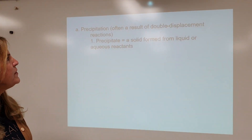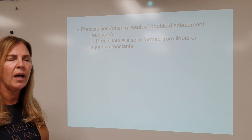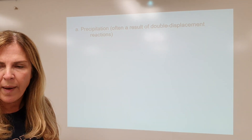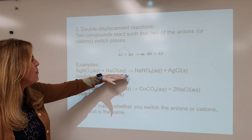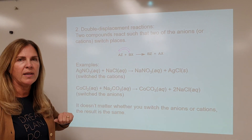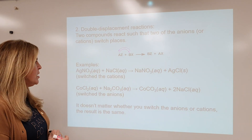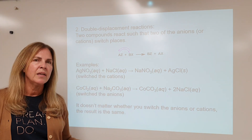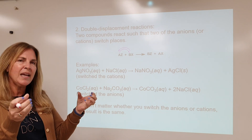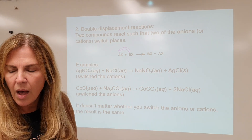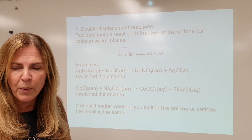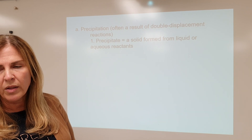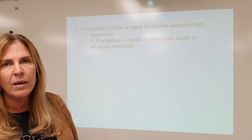Precipitation is often the result of a double displacement reaction. Double displacement reactions are a lot of what we call wet chemistry. Both reactants are aqueous, meaning dissolved in water. When these substances dissolve, they dissociate into ions. If I take two liquids and pour them together, one way to know a reaction has happened is the formation of a precipitate — a solid formed from a liquid or aqueous reactant.